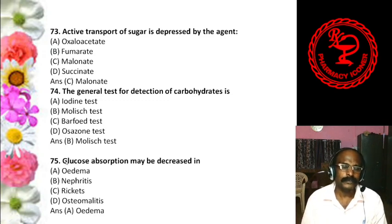Question 75: Glucose absorption may be decreased in — Edema, Nephritis, Rickets, or Osteomyelitis. The answer is edema — glucose absorption is decreased in edema.